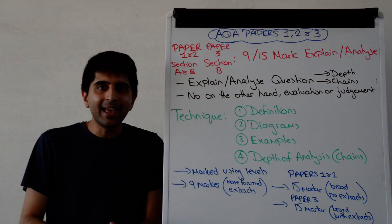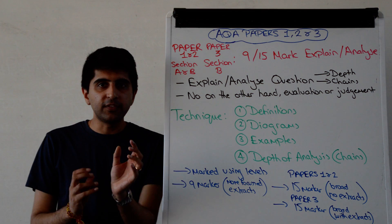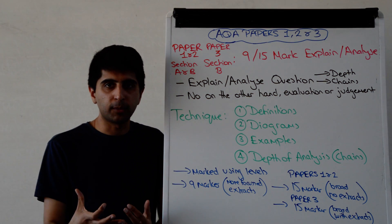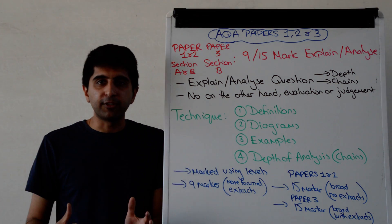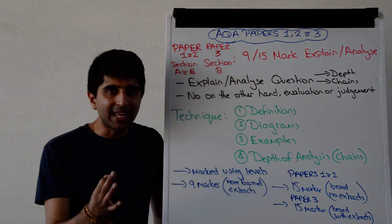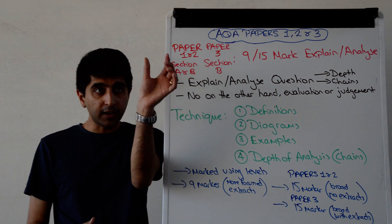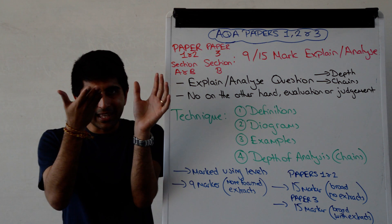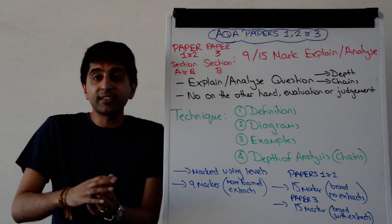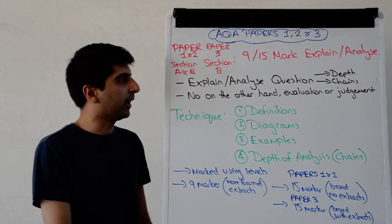These are all explain or analyze questions, which means it's the depth of economic theory that is going to be tested. How well can you explain economic theory? The level of depth is what's going to determine your final mark at the end. In that sense, chains of analysis is really important. Can you go through economic theory, starting here, ending here, and linking all the chains of analysis together to get to the end? That's how well you know your theory. That's what's going to score you the top marks, if you can do that really well.